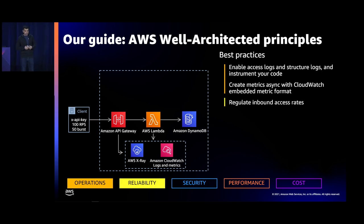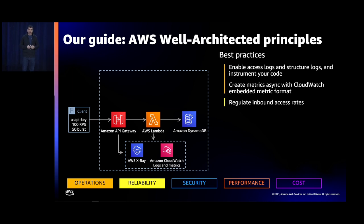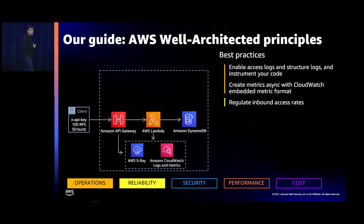From a reliability perspective, enable inbound access rate limiting right at the API Gateway — for example, 100 requests per second depending on your application type. This reduces cost, helps avoid bad actors, and maintains resiliency. If you have non-serverless services downstream like EC2 or RDS, rate limiting also prevents those services from getting throttled.